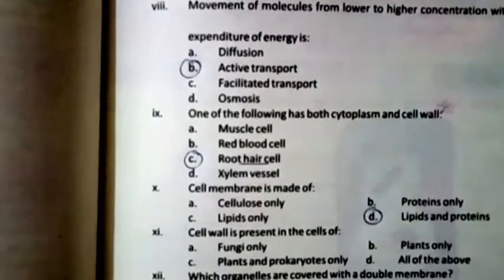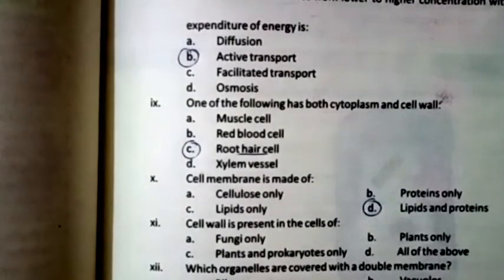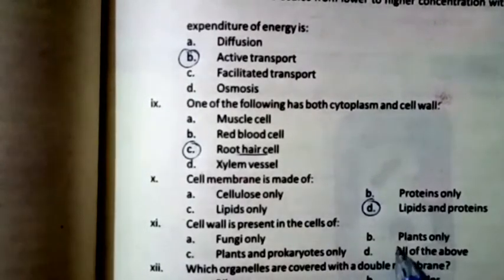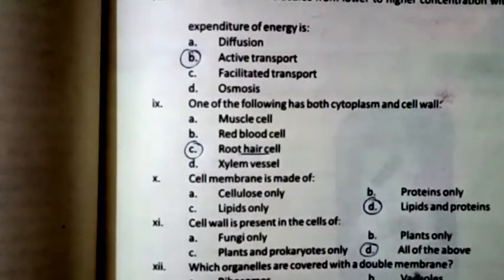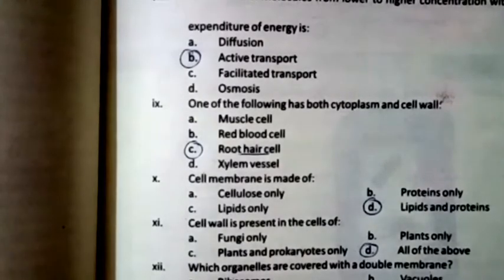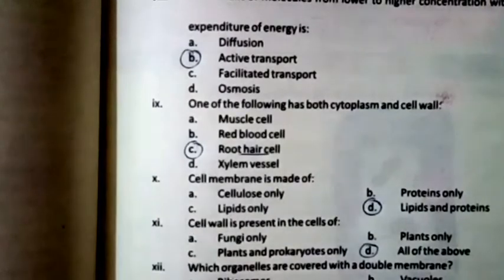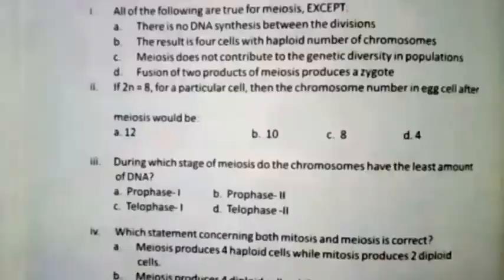The cell wall is present in fungi only, plants only, plants and prokaryotes only, or all of the above. The right option is D — all of the above. Which organelle is covered with a double membrane — ribosome, vacuole, centriole, or mitochondria? The right option is mitochondria.